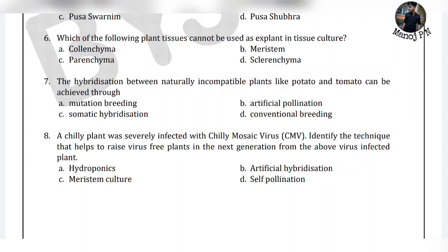Look at the 7th question. The 7th question is: the hybridization between the naturally incompatible plants like potato and tomato can be achieved through them. See, if you want to talk about this, what you have to remember is naturally incompatible plants. So these two plants are naturally incompatible. Even if you want to hybridize, the technique only you can use is somatic hybridization.